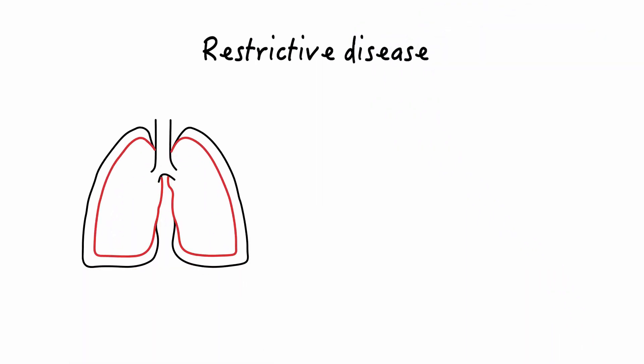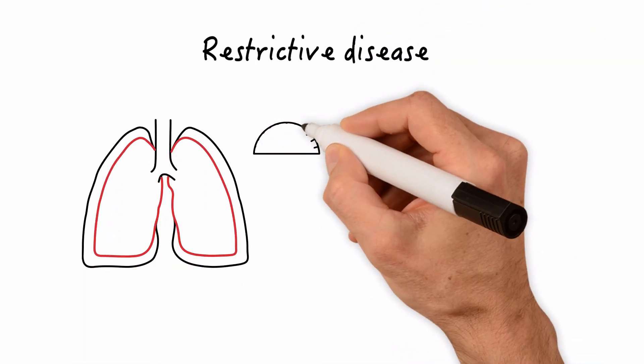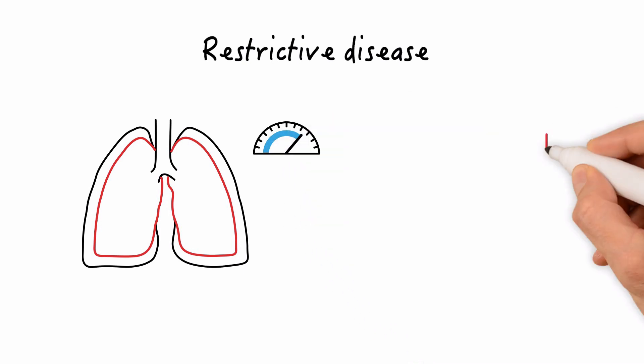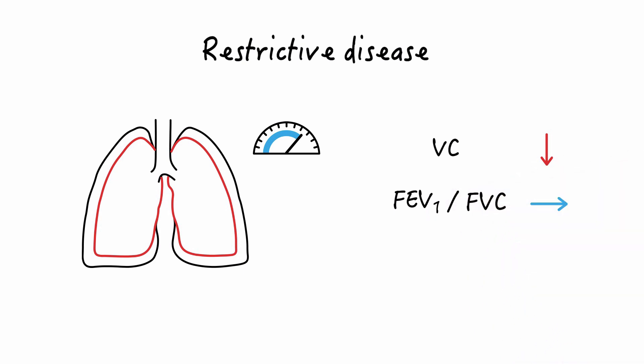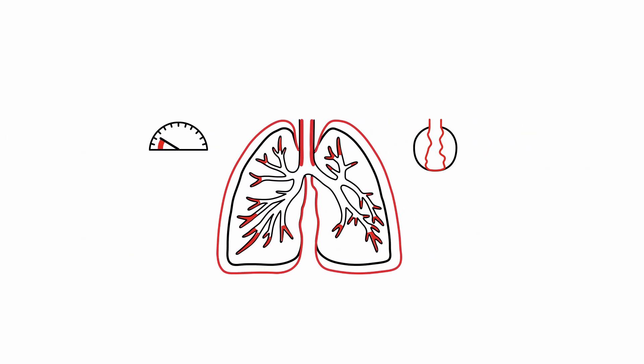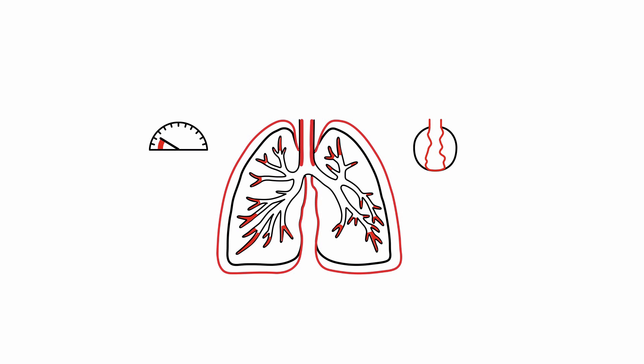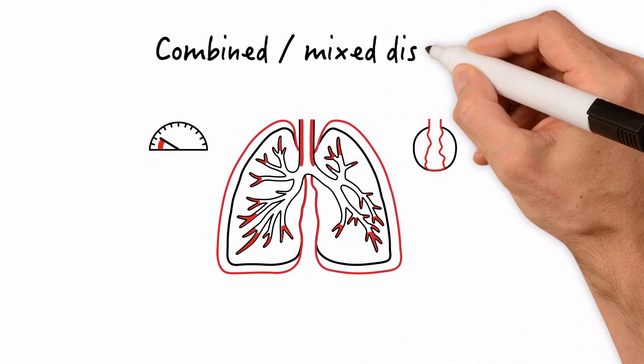On the other hand, a restrictive pattern is characterized by a limitation in lung or chest wall expansion and is manifest as a reduced vital capacity, preserved FEV1 to FVC ratio, and reduced lung volumes. Some disease states may produce both obstructive and restrictive findings, constituting a so-called combined or mixed pattern.